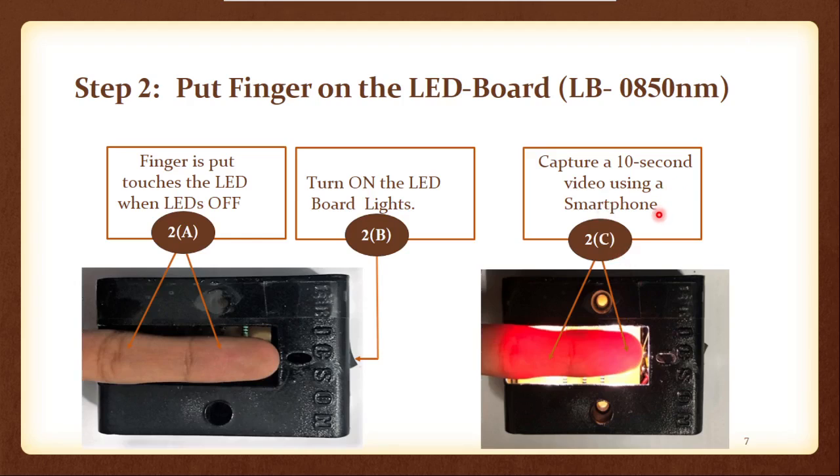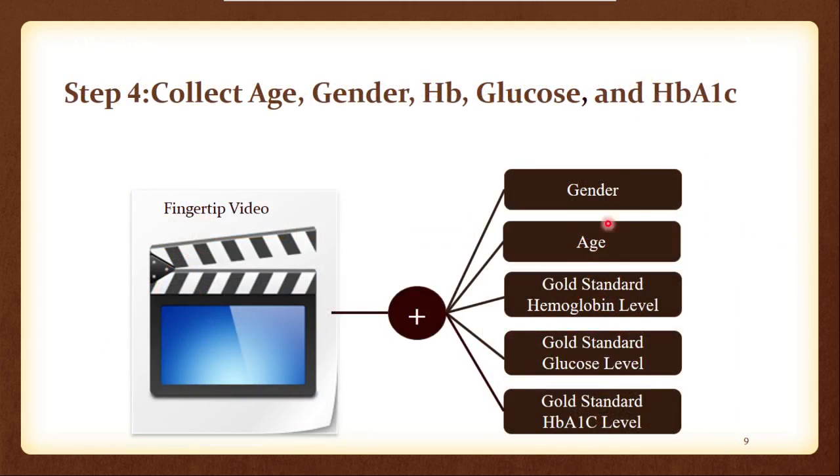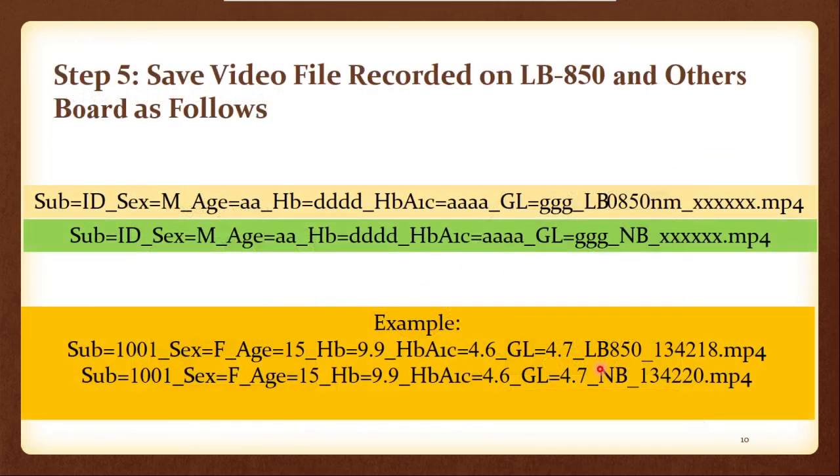This process has been done also to LED board 1070 nanometers as well, the same process as our step two. Now in step four we generally collect this data which involves gender, gold standard glucose level, and also HbA1c level as well. Then also we need to save that video file, and these are the formats that we have saved - we saved the sex, HbA1c and other data like this format and an example is given here, the file name.